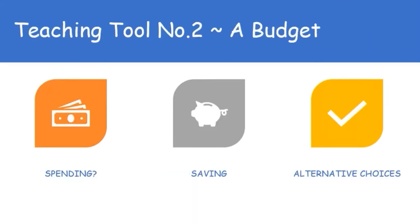The second tool you can use is a budget. A budget is a spending plan — it is making a plan for how you spend your money. Children do get money, whether it's from an allowance or just from asking. Teaching your kids at a very early age about spending, savings, and making choices can be done through what are called teachable moments — moments throughout the day when you have an opportunity to have a conversation based on your child's interests.